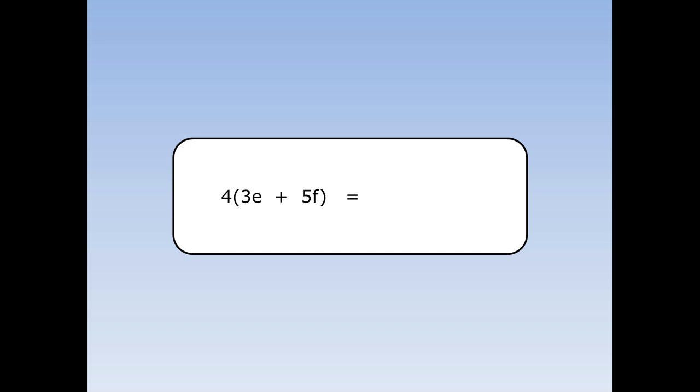We're going to multiply out this bracket. Remember, the 4 at the front multiplies everything inside the bracket. 4 times 3e is 12e. 4 times 5f is 20f. When we multiply out the bracket, it's equal to 12e plus 20f.